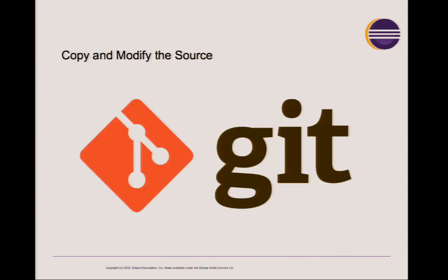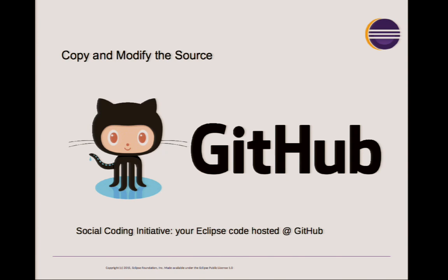To make it easy to copy and modify source, the Foundation has moved completely to Git — there are no more projects using CVS or SVN. We completely moved to Git, and it's now the only source code management system we support. To further improve the experience for projects, we also now allow projects to host their code directly on GitHub as part of the Social Coding Initiative.